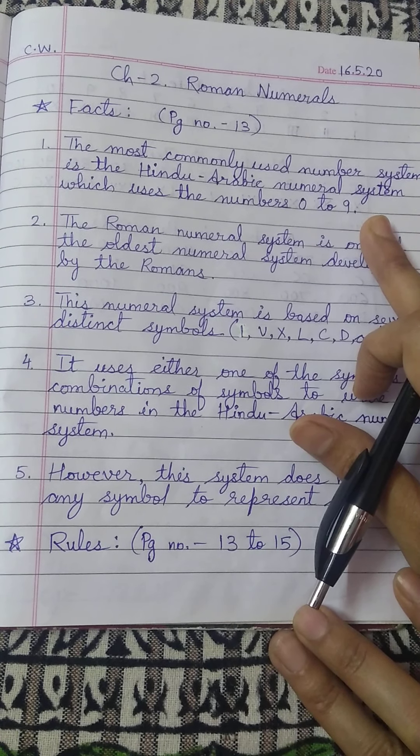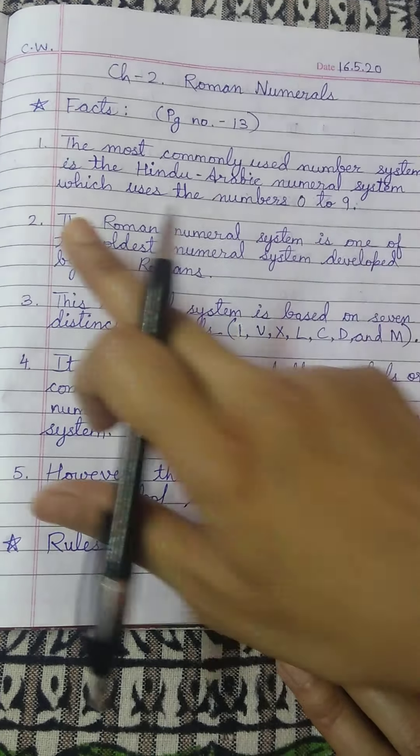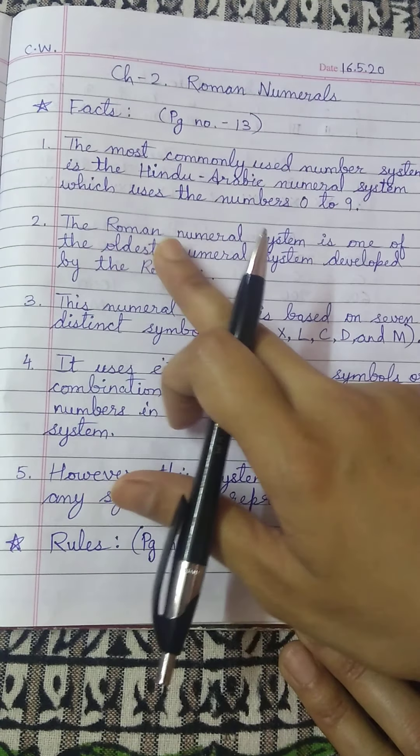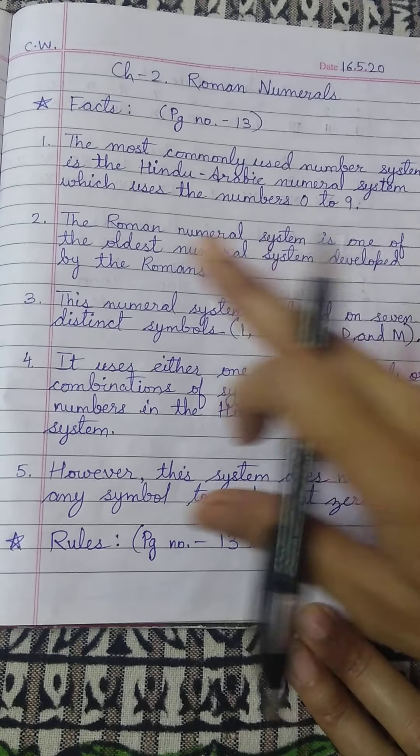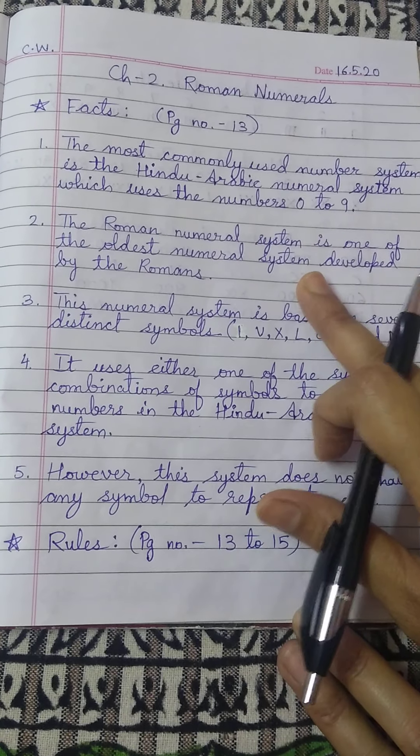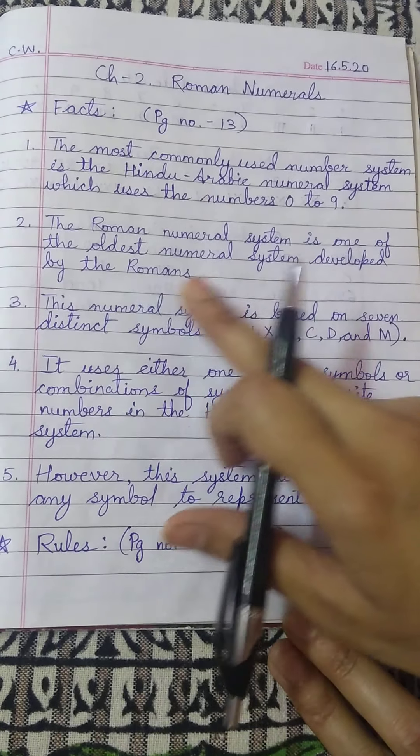0, 1, 2, 3, 4, 5, 6, 7, 8, 9. Second fact is the roman numeral system which we are studying in chapter number 2 is one of the oldest numeral system and it is developed by the Romans.